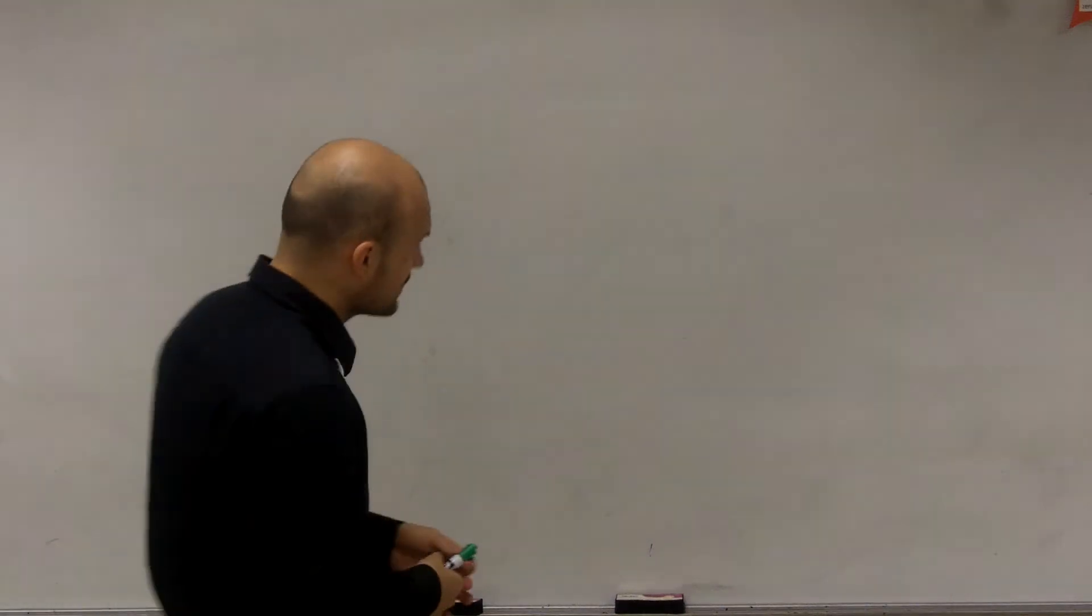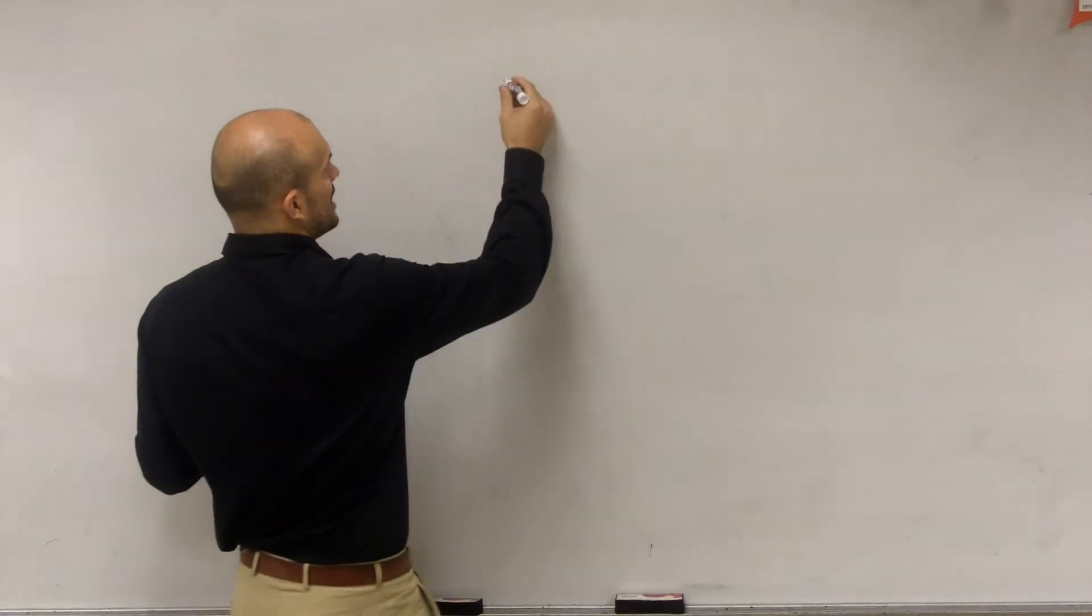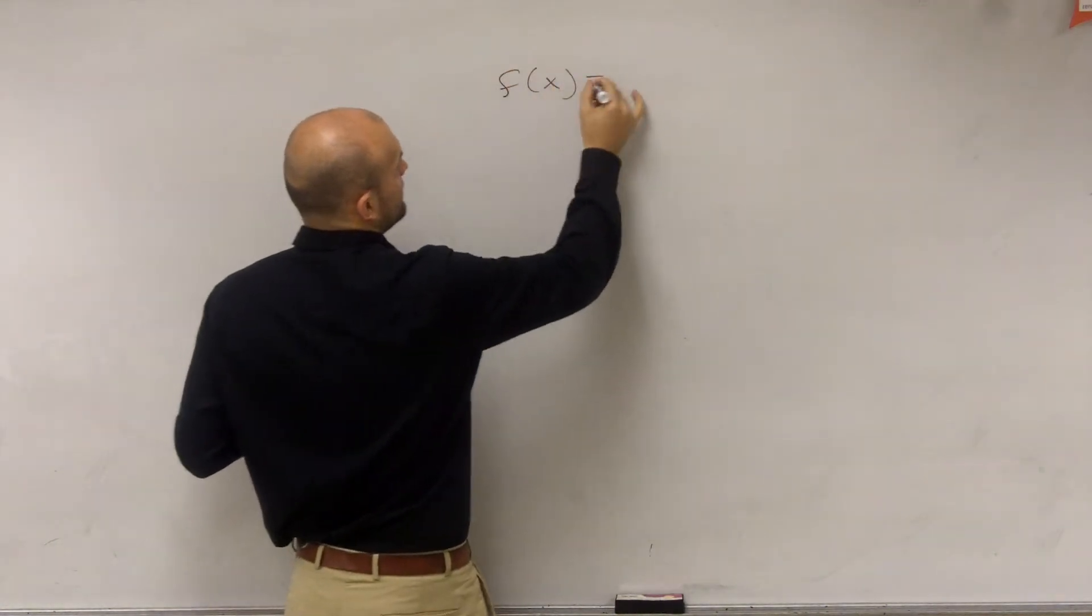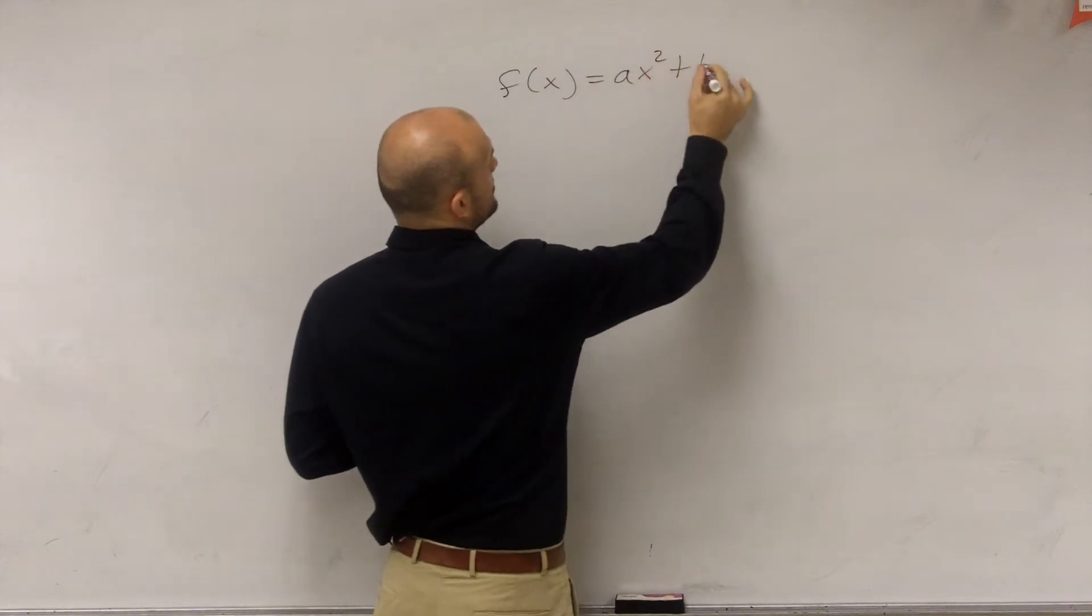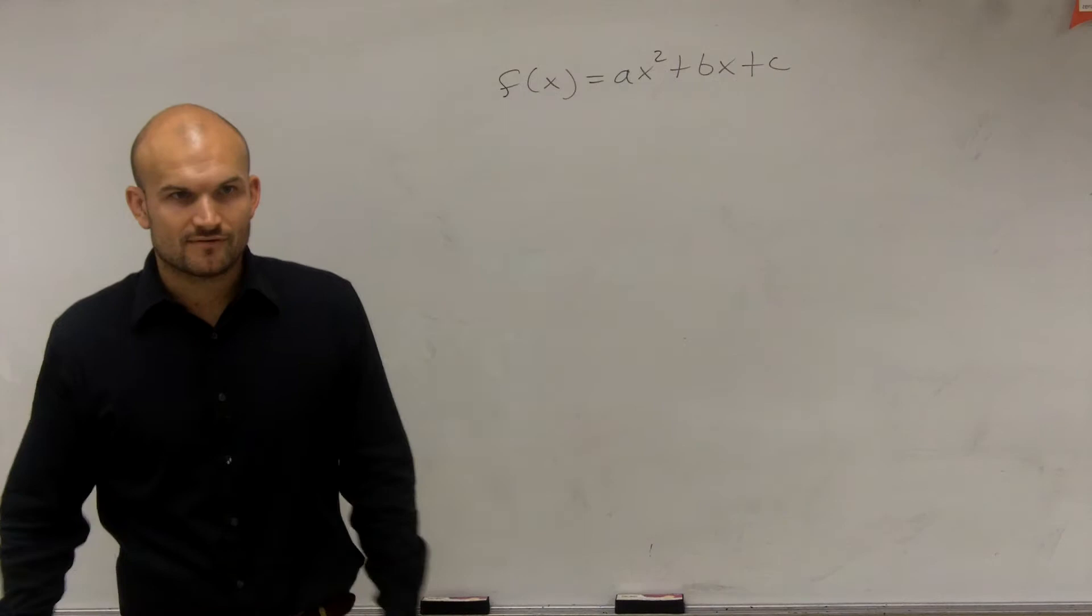All right, so the first thing we want to go over is let's remember what we've talked about so far. The first thing we've talked about, ladies and gentlemen, is a quadratic function: f(x) = ax² + bx + c. We talked about our quadratic function.